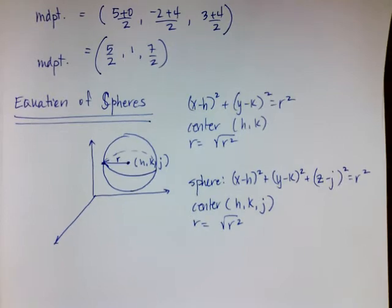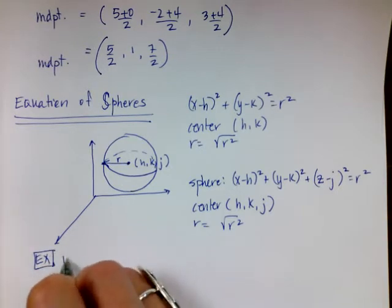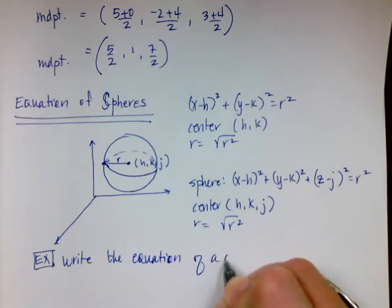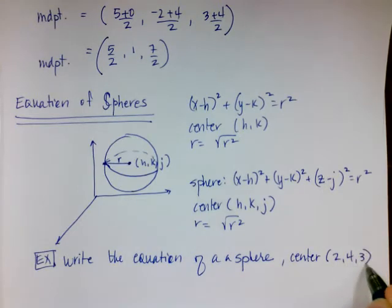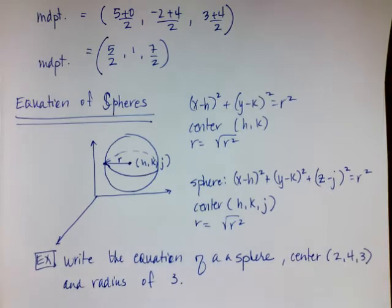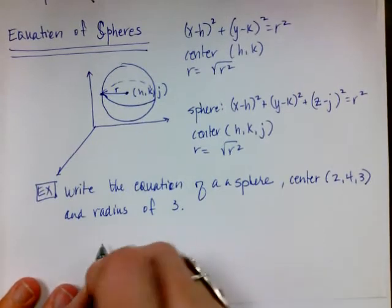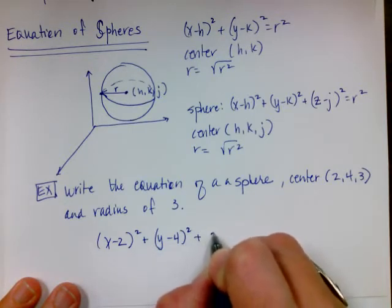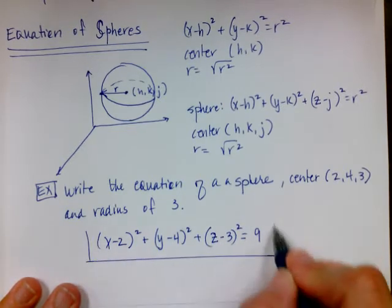Pretty easy concepts — we're just adding a third dimension to math we already know. In my example, I want you to write the equation of a sphere with a center of (2, 4, 3) and a radius of 3. It's pretty simple: the equation is (x − 2)² + (y − 4)² + (z − 3)² = 9. Super simple.